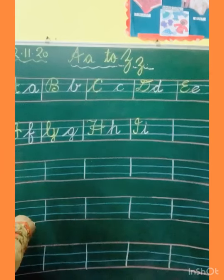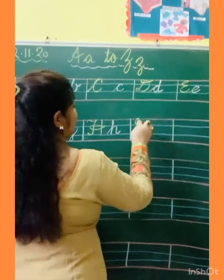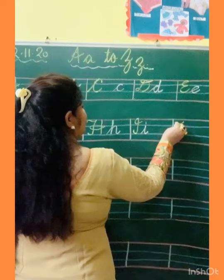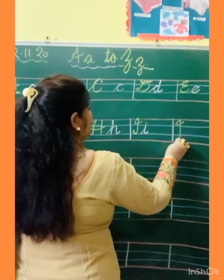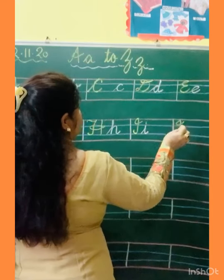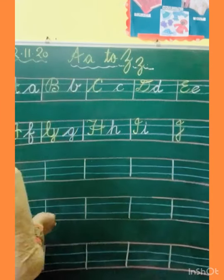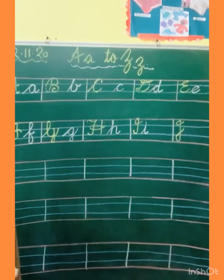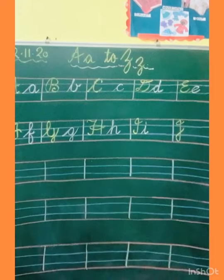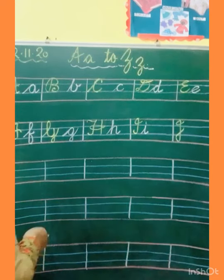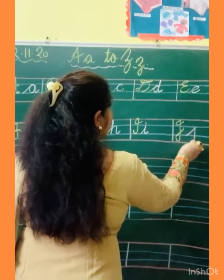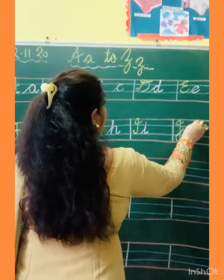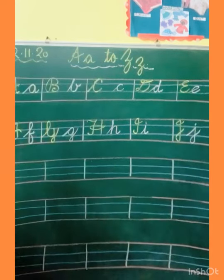Now see J. How to make J? Like I — slanting, touch the line, go up, standing line, come down, and turn. Understood? And small J: slanting line, slanting line, turn, touch the line, and kick. And a dot on the upper side.